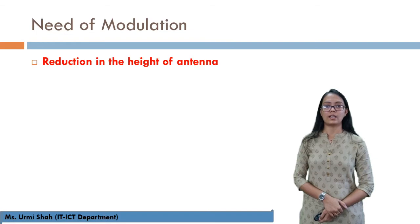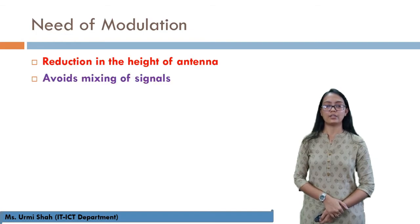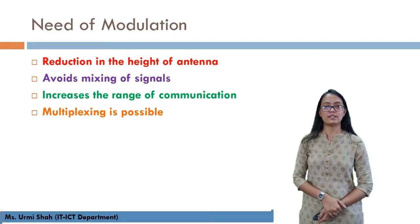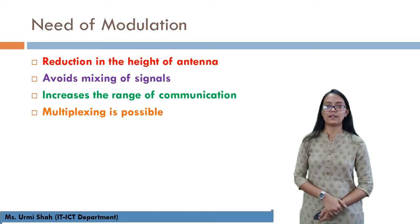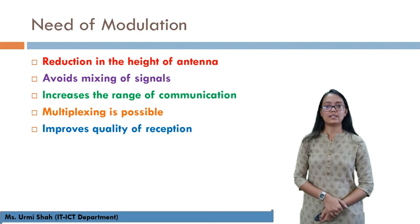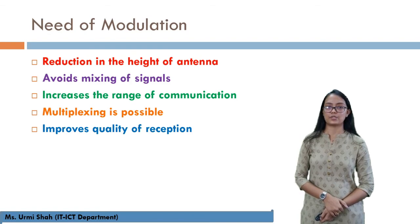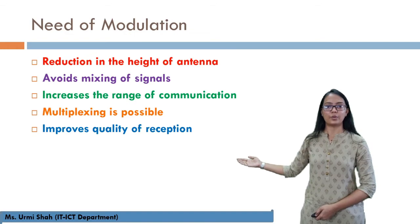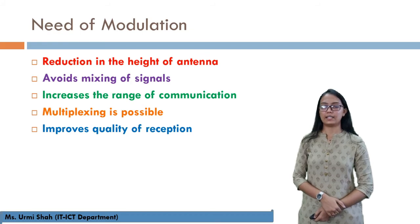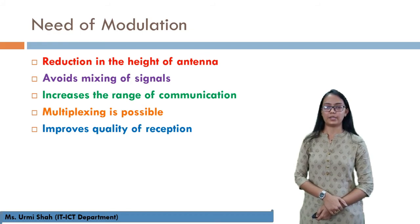Why are we performing modulation? The following are the reasons for modulating a signal. First, reduction in the height of the antenna. Second, avoiding mixing of signals. Third, increase in the range of communication. Fourth, multiplexing possibility. Fifth, improvement in the quality of reception. These parameters are considered whenever modulation is performed. An in-depth discussion of the need for modulation will be covered in the upcoming next session.